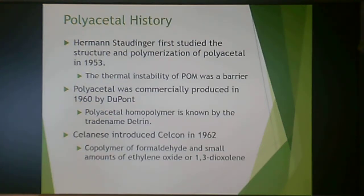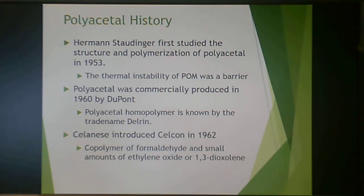Polyacetal was first studied by Herman Staudinger in 1953, but it was somewhat thermally unstable, so not much came of it. In 1960, polyacetal was commercially produced by DuPont, and the homopolymer is known by the trade name Delrin. Celanese also introduced Celcon in 1962, which is a copolymer of formaldehyde and small amounts of ethylene oxide, as opposed to the homopolymer Delrin.